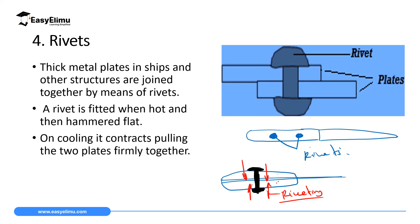The idea of rivets is used to hold thick metal plates in ships and containers very strongly, where you cannot use a welding machine to hold two thick metal plates.